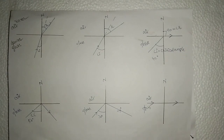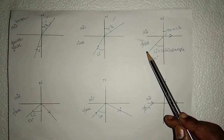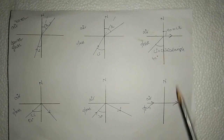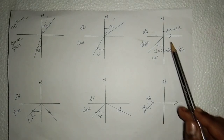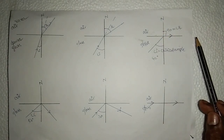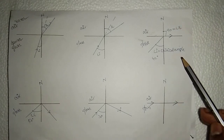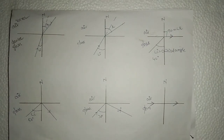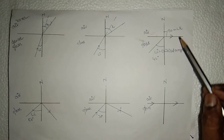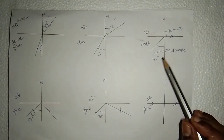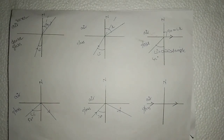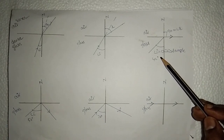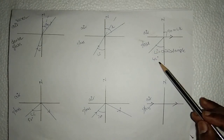I already gave the definition of critical angle. When light travels from denser to rarer at a particular angle of incidence, light grazes the interface of air and glass — it never enters the rarer. That angle is called critical angle. At critical angle, the angle of refraction is 90 degrees. Generally, critical angle is represented by the letter C. The approximate critical angle of the semicircular glass slab is 42 degrees.